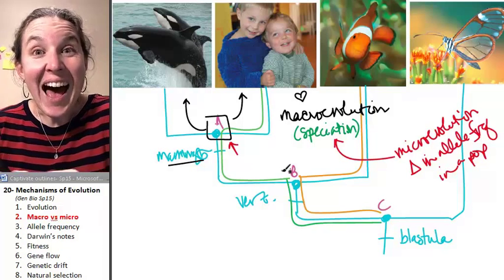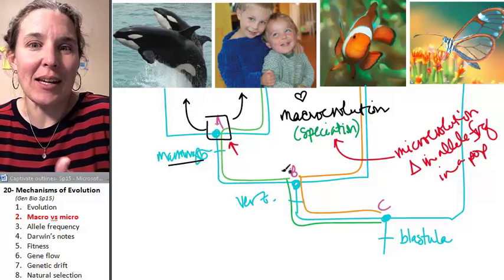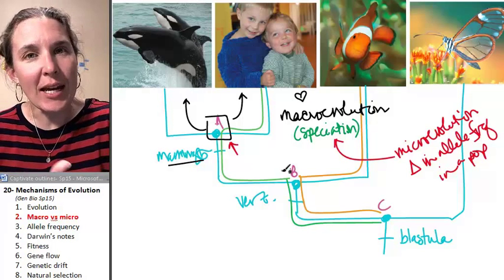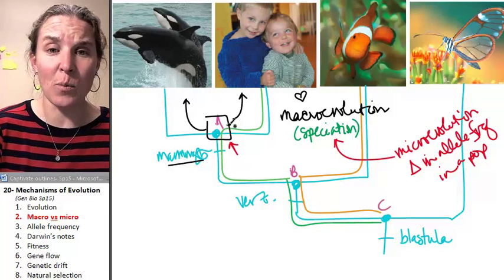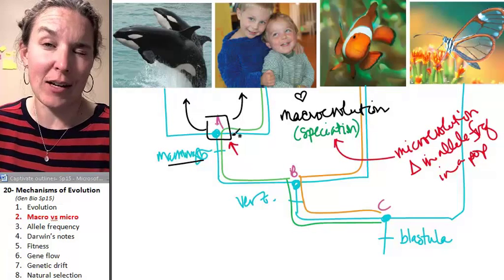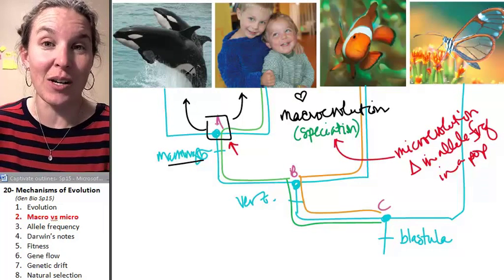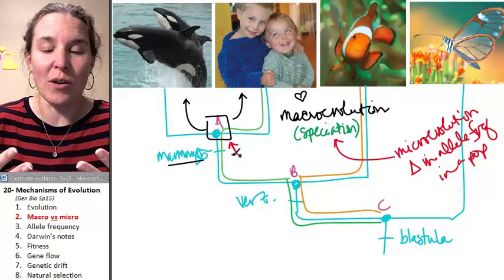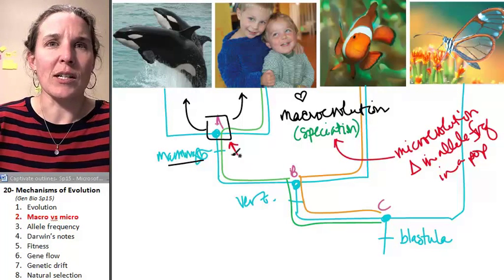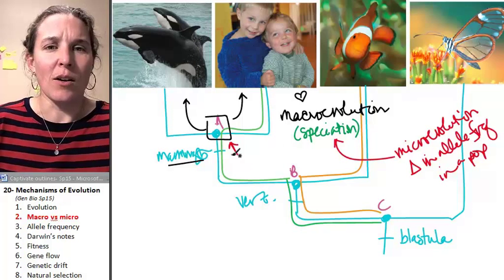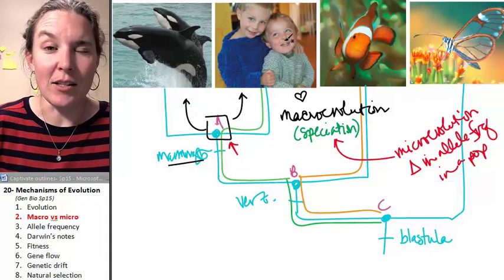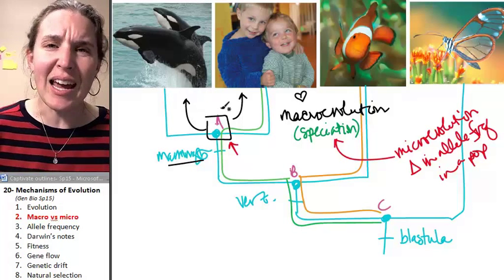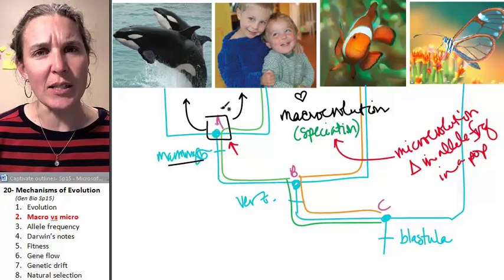And then that allele frequency that was present back in the day changed. And I mean, we can see phenotypic evidence of the change in our two living populations of critters that gave rise to both of those populations. But we can see that, yeah, it would make sense that the allele frequency would change.